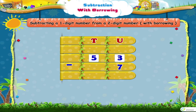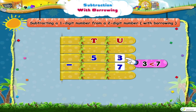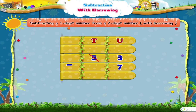53 minus 7. Now, 3 units minus 7 units is not possible as 3 is less than 7. So, we need to take help from the digit in the tens place. That is, we need to borrow a 10 from the tens place. So, the tens place now has 1 less.